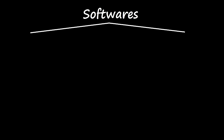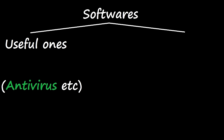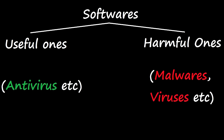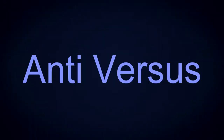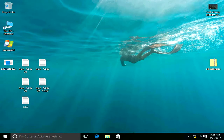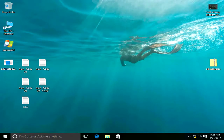Software are of two types: useful software like antiviruses, and the other type is harmful software like viruses and malwares. So in the battle between them, who will win? This channel is all about the recent outbreak of malwares and ransomwares and how we can prevent them from infecting us.